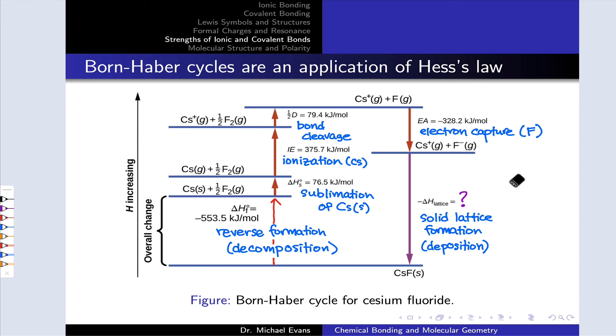Now we have Cs⁺ and F⁻ ions in the gas phase, and this is the end point for the lattice energy process. We've gone all the way from cesium fluoride solid to the gaseous ions, not directly by ripping those ions apart from one another, but by taking a set of steps, each of whose enthalpies we know.